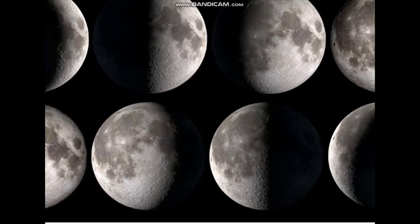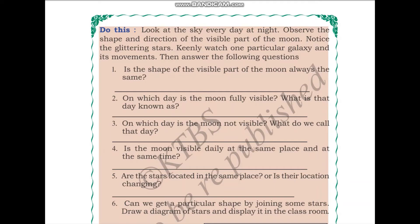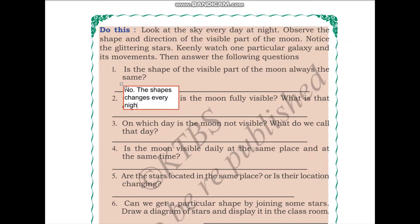You will be able to see one of these phases each night. One night it might be full moon, one night it might be half moon. The visible part of the moon has different shapes every night. The shape changes gradually from full moon to new moon and new moon back to full moon. So, the answer to the question 'is the shape of the visible part of the moon always the same?' is no — the shape changes every night.